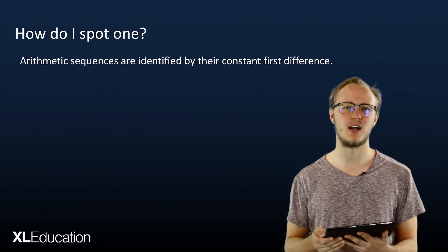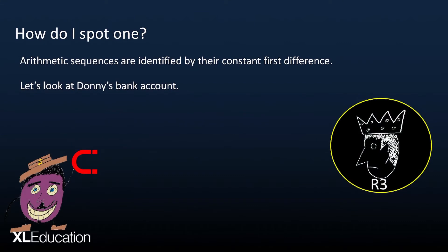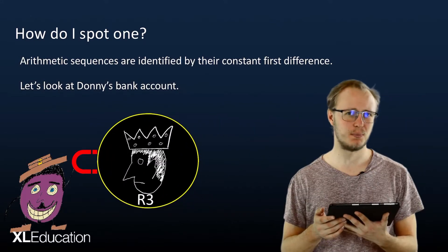How do you spot an arithmetic sequence? Arithmetic sequences are identified by their constant first difference. I've got a friend Donnie, and Donnie has a bank account — and a bit of a problem. Every single day he goes to Mr. Sweet and buys three rands worth of sweets.